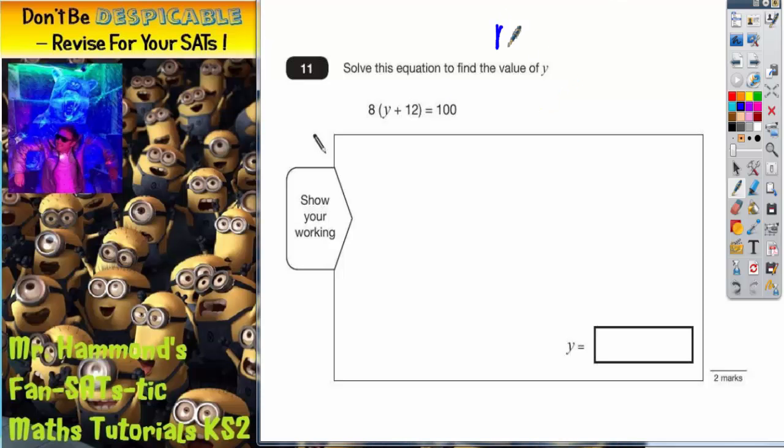Well, y is a mystery number, as it is in any equation, and it's our job to try and find what the value of y is. So that when you add 12 onto y and you times this by 8 - remember there's an invisible times sign between the 8 and the bracket, it means y plus 12 times by 8, or 8 lots of whatever is in the bracket. So we're trying to find y so that when we add 12 onto it and then times it by 8, we get 100.